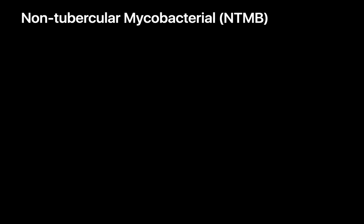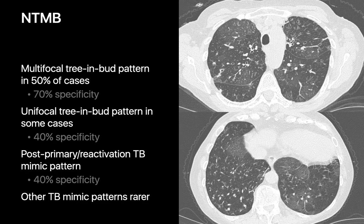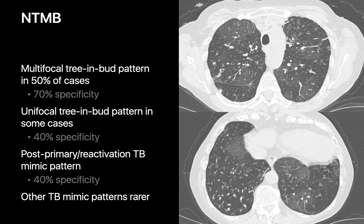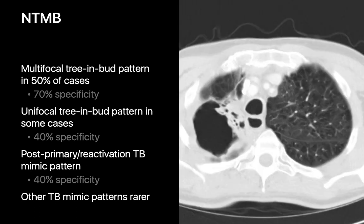Non-tubercular mycobacterial lung infections, such as MAI, classically present as a multifocal tree-and-bud pattern with associated bronchial wall thickening, bronchial dilation, and mosaic attenuation. However, they can sometimes present with these imaging features in a unifocal distribution. Non-tubercular mycobacterial infections are also referred to as TB mimickers, in that they can mimic the ways TB presents — for example, with a post-primary type appearance featuring a cavitary apical fibroproductive opacity. Miliary or random nodular interstitial patterns are also possible but much less common.